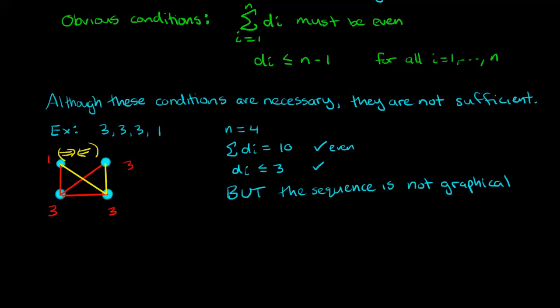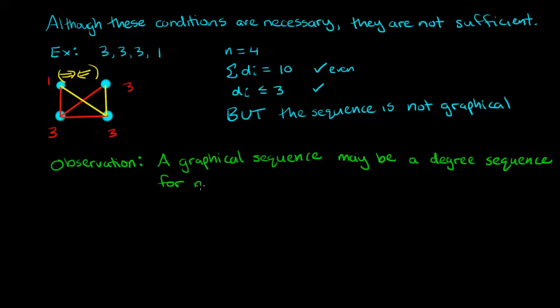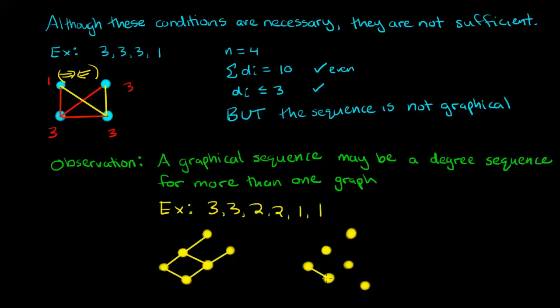Before we take a look at conditions that are both necessary and sufficient for a sequence to be graphical we should make the following observation. A graphical sequence may be a degree sequence for more than one graph. Let's take a look at the example 3, 3, 2, 2, 1, 1.